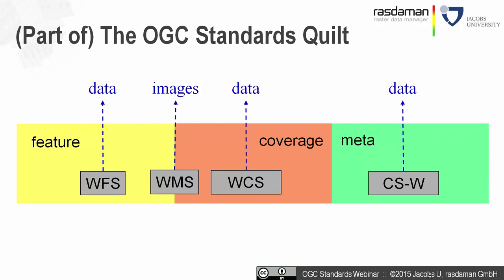We find services along the line of data structures. We know about the classical triad of feature, coverage, and metadata, and for each we find services. A Web Feature Service gives us features. A Web Coverage Service allows access to coverage data. A Catalog Service allows search and retrieval on metadata. In between we have the Web Map Service, which understands both features and coverages but returns images exclusively for human consumption.